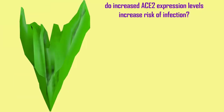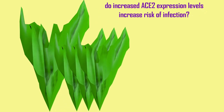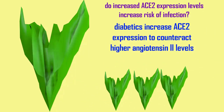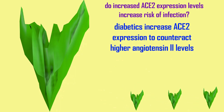Thus, some of the susceptibility that individual patients may have to infection can depend on the levels to which they express ACE2 receptors. For example, in diabetics, the quantity of ACE2 receptors on cells can be increased to combat elevated levels of angiotensin 2, and this can make them more susceptible to virus binding, thus increasing their risk.